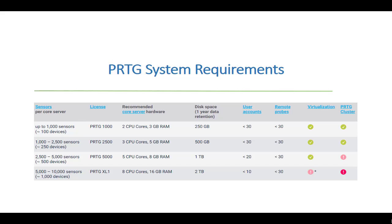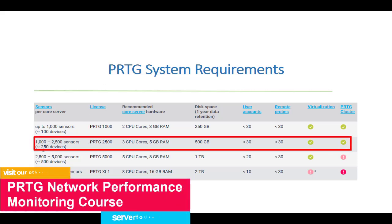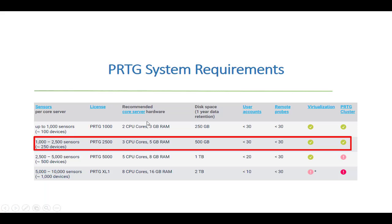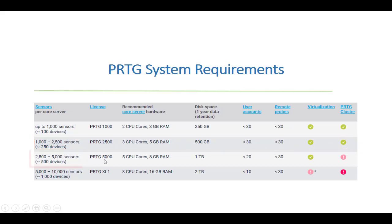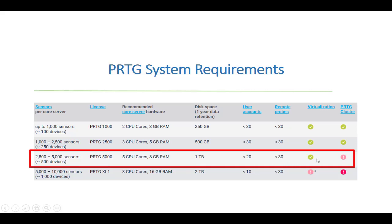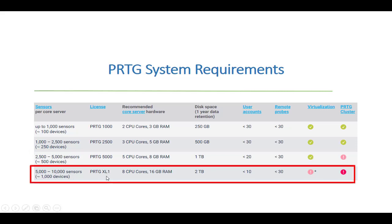For a PRTG 2500 license you need 5 GB of RAM and 500 GB of disk space, and it's recommended to stay below 30 active user accounts. For PRTG 5000 you need 1 TB of disk space, and PRTG cluster use is not recommended at that tier. For the XL or X5 enterprise license you need multiple CPU cores and 16 GB of RAM; installation on a virtual platform is not recommended for this version.